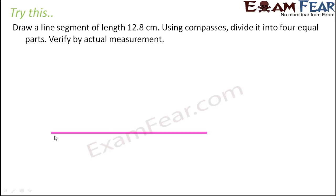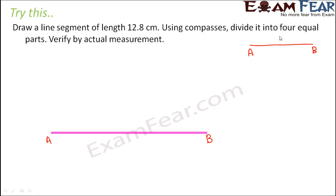Now we have to divide it into 4 equal parts. So let's say that this is AB. So if this is AB and you want to divide it into 4 equal parts, how will you do that? So what we can do is first let's draw a perpendicular bisector. The perpendicular bisector will be perpendicular to AB and it will also divide AB into 2 equal parts.